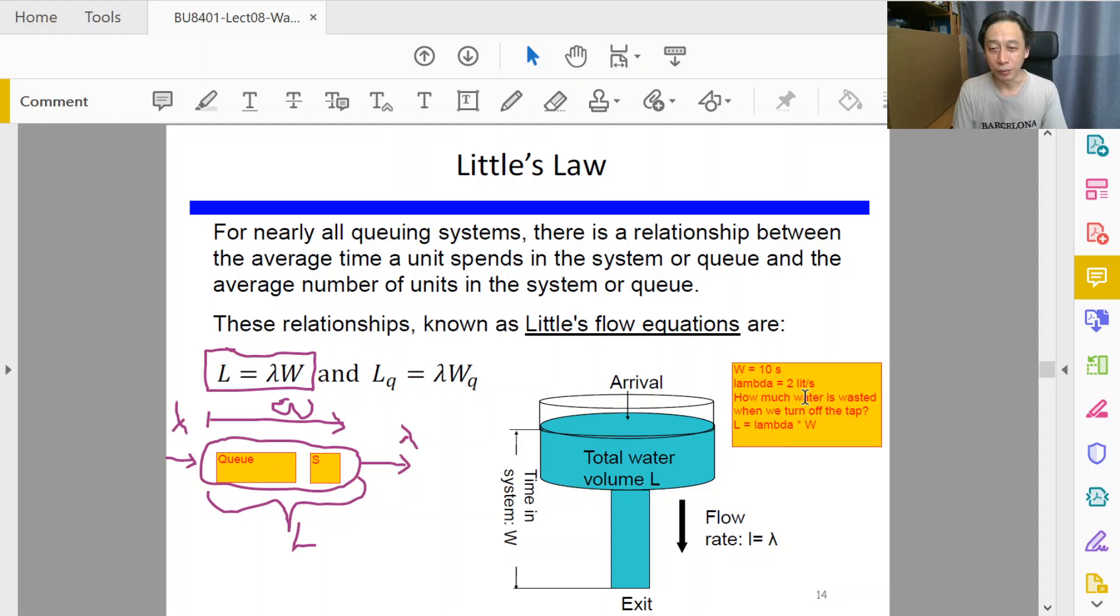The total amount of water droplets entity will be given by lambda times W. That's equal to 2 liters per second times 10 seconds. Notice how the units cancel out to give us the correct unit: 20 liters of water would have been wasted every time we turn off the tap. That must be a very, very long pipe, and the pressure is high. Despite it being just 10 seconds, because the pressure is high and the tube is very long, there would have been a lot of water trapped in the pipe.